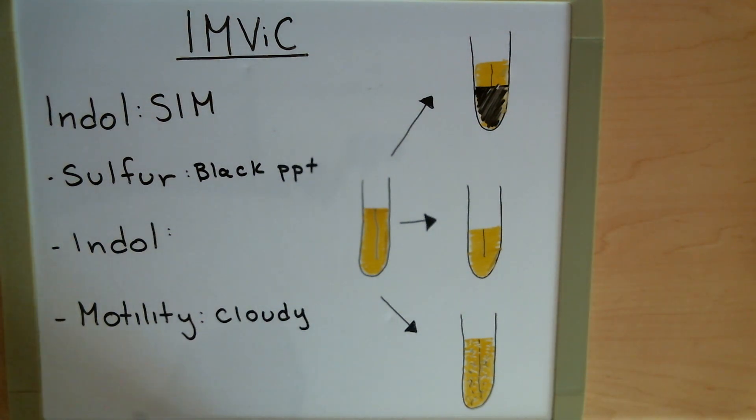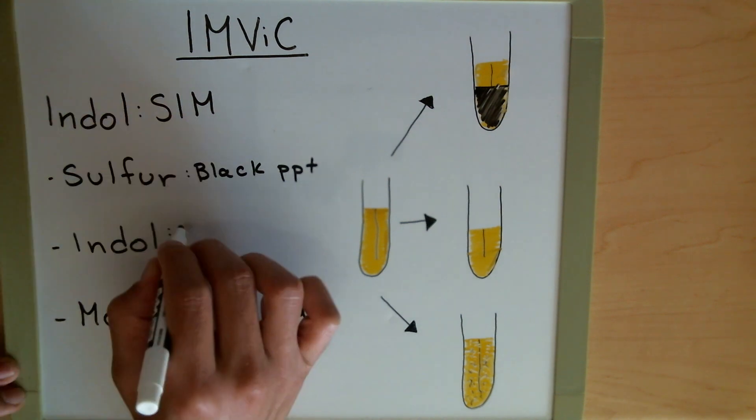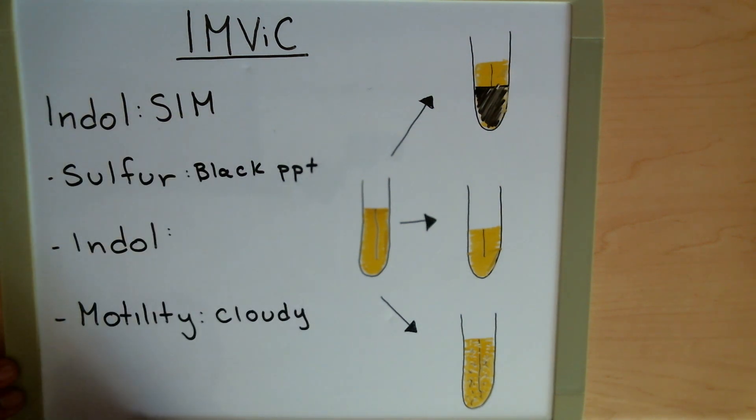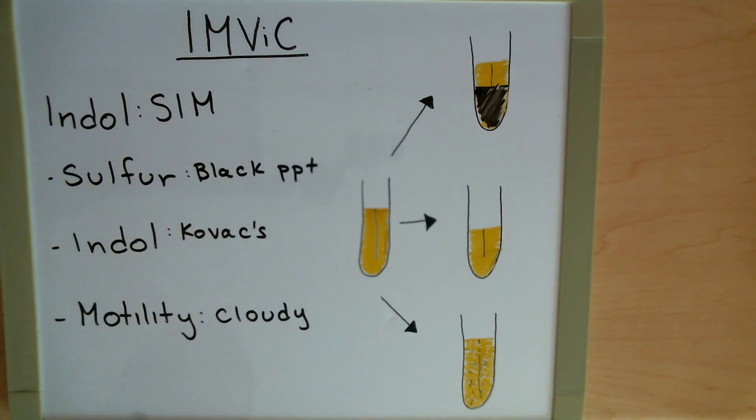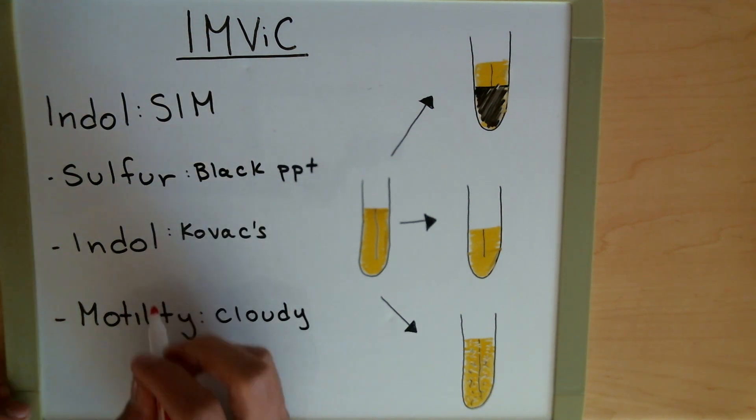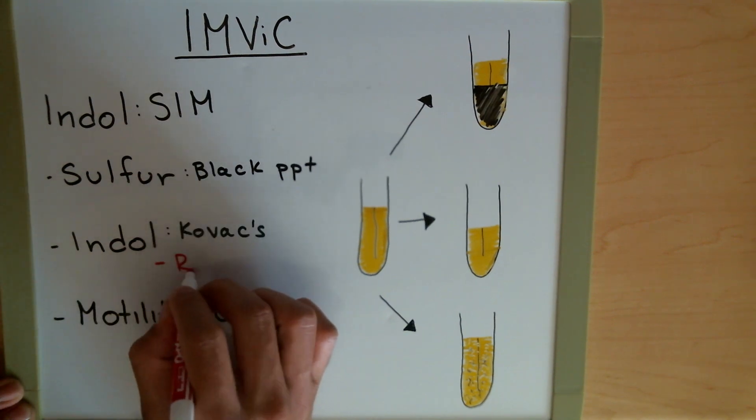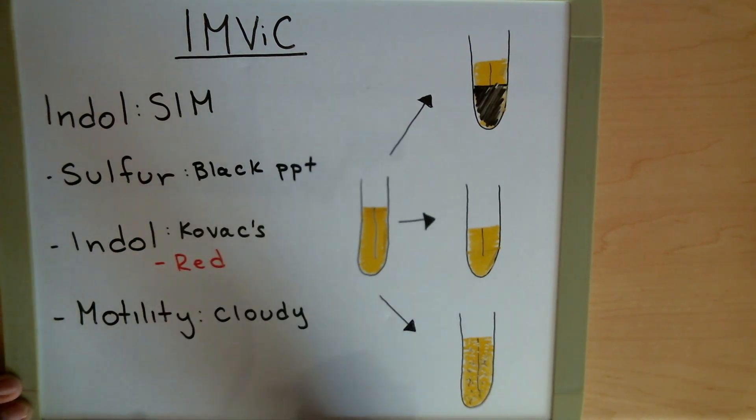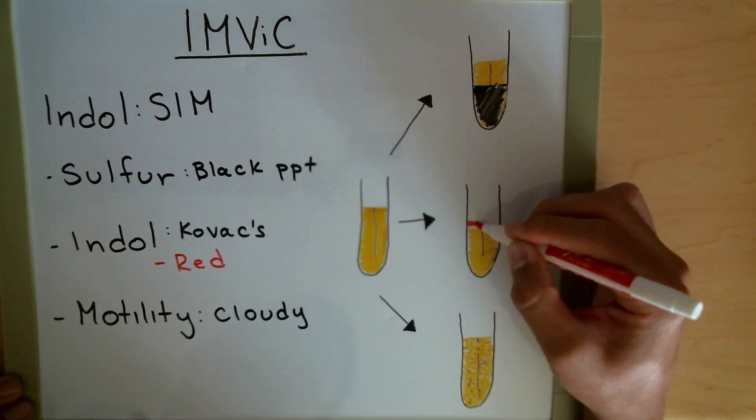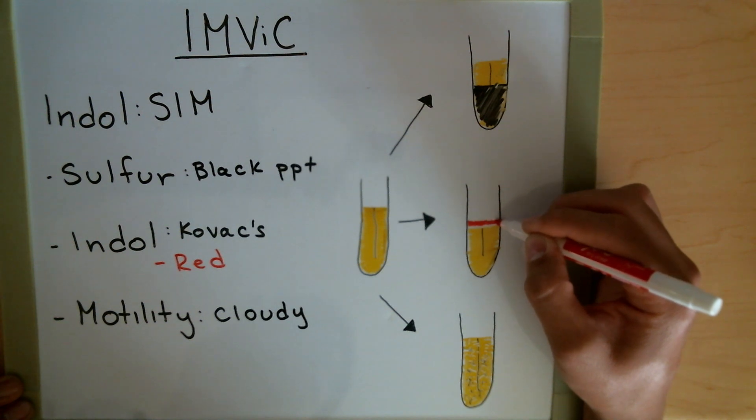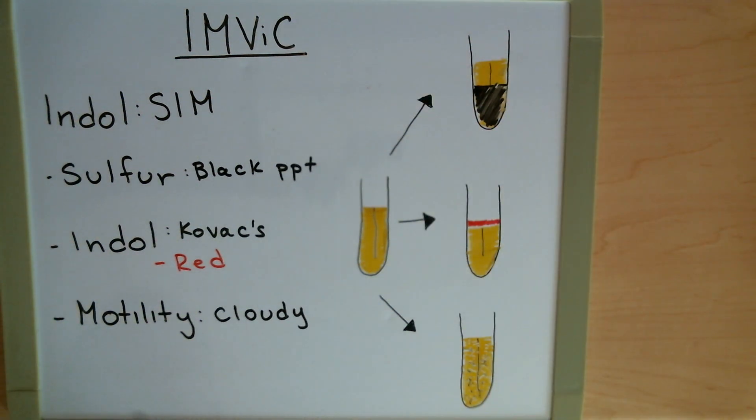The thing with indole is that we don't see this reaction right away. We have to add Kovacs reagent. When we add Kovacs reagent, the thing that we're going to be looking for is a change in color to red, not through the whole test tube, but just through the top portion where the Kovacs reagent meets the media. If it's red, then that's positive, meaning that indole is there. Indole is a byproduct when tryptophanase breaks down tryptophan.